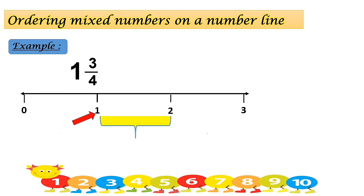The denominator — the number at the bottom — is four. So it means that between one and two, there are four equal parts. We are going to divide the section between one and two into four equal parts: one, two, three, and four.